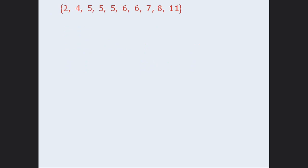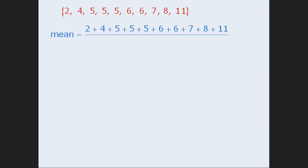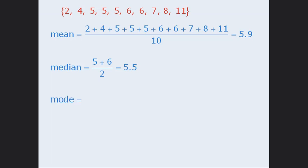Now let's see how these three measurements compare when describing the same set of numbers. To calculate the mean, we will find the sum of the 10 numbers, then divide by 10 to get an average of 5.9. Since the 10 numbers are already arranged in ascending order, we will find the two middle-most numbers and then find their average to get a median of 5.5. Since the 5s occur the most, the mode is 5.